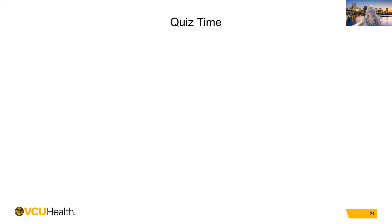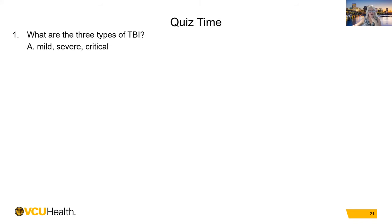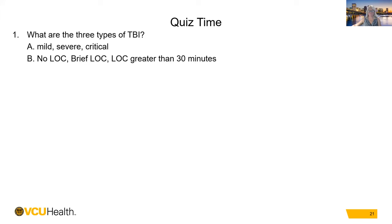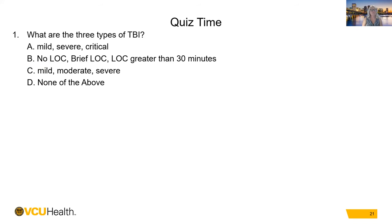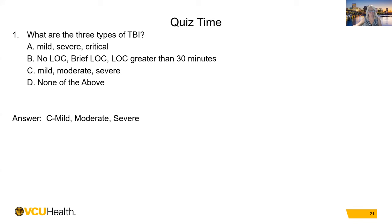Quiz: Question 1 — What are the three types of TBI? Options: A) mild, severe, or critical; B) no LOC, brief LOC, LOC greater than 30 minutes; C) mild, moderate, or severe; D) none of the above. The answer is C — mild, moderate, or severe are the three types of traumatic brain injuries.